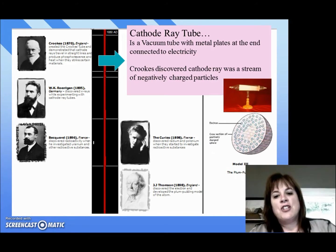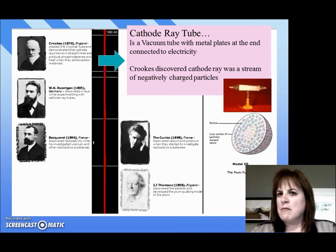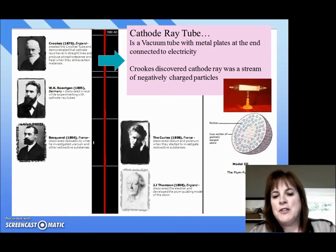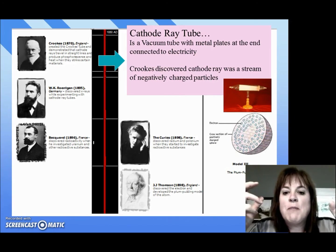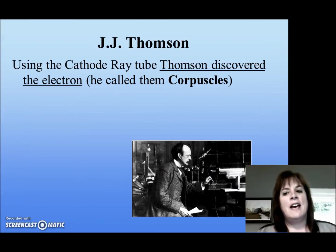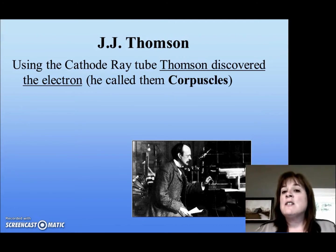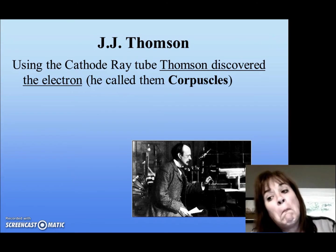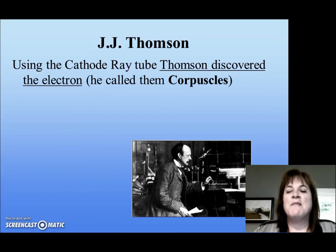Interestingly enough, there's this guy J.J. Thompson, who's working at Cambridge. J.J. Thompson started playing around with this cathode ray tube and found that he could deflect that beam with electric and magnetic fields — proving that this wasn't some light disturbance, but that this was actually a negatively charged particle, which he called a corpuscle. Now we call it the electron. So J.J. Thompson is the one who discovered the electron.